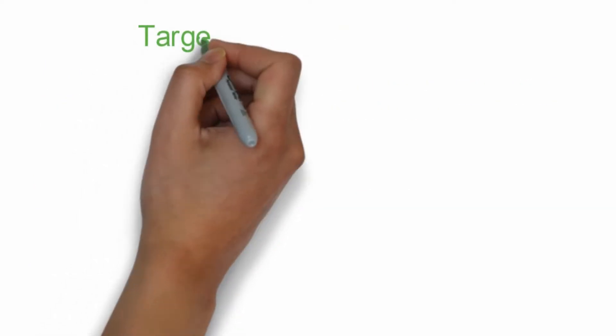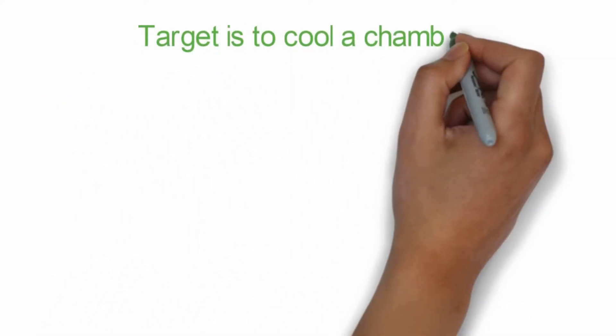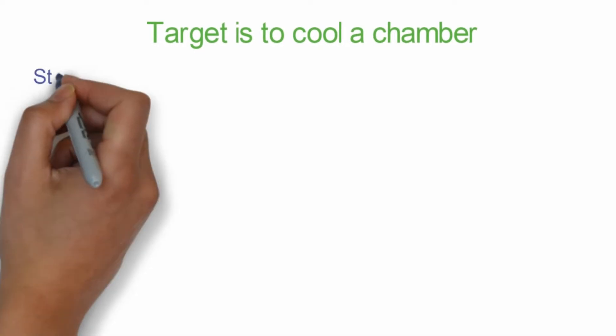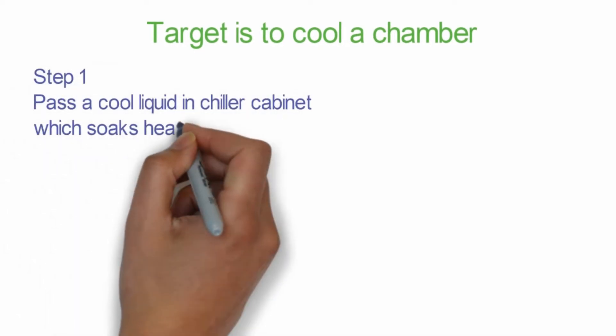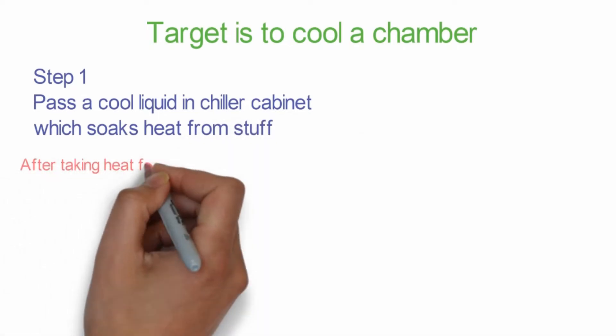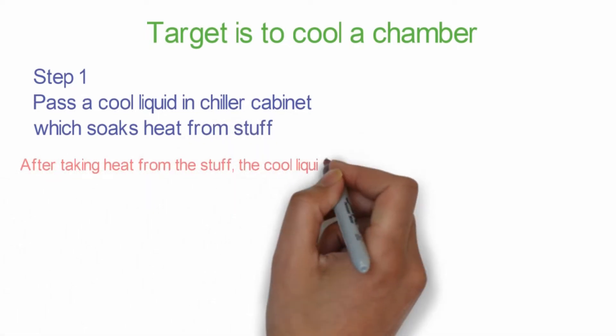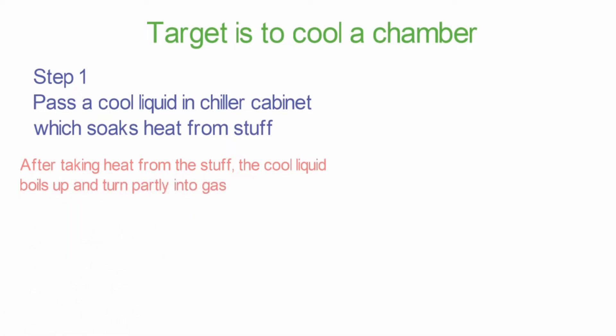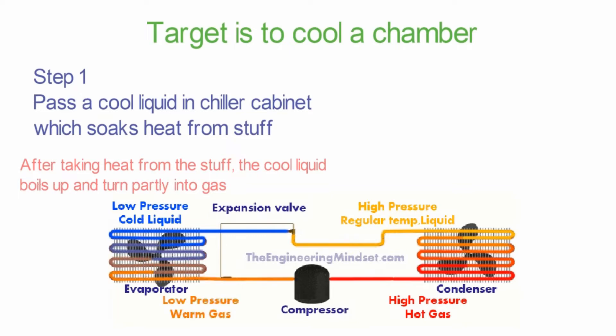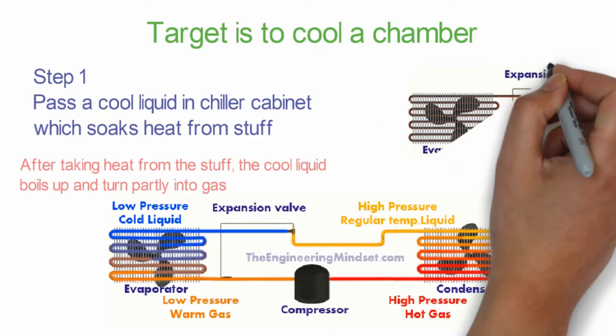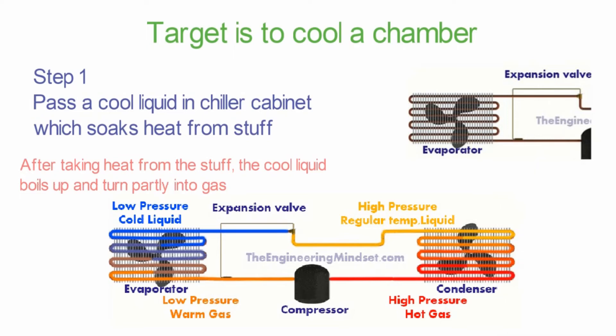To make low pressure cool gas—that is the expansion valve. So target is to cool a chamber. Step one: pass a cool liquid in the chiller cabinet which soaks heat from the stuff. But after taking heat from the stuff, the cool liquid boils up and turns into gas. So this is the first step.